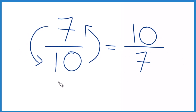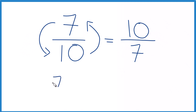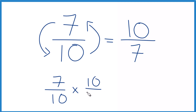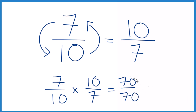You could check your work. Take 7 tenths and multiply it by its reciprocal, 10 sevenths, and you should get 1 if you did it correctly. 7 times 10 is 70, 10 times 7 is 70, and 70 divided by 70 equals 1. So we did this correctly.